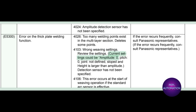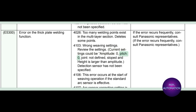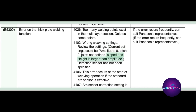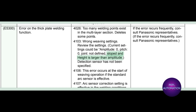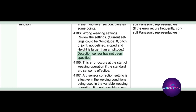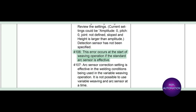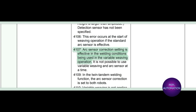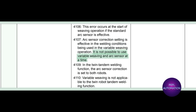Current settings could be: amplitude 0, pitch 0, joint not defined, sloped and height is larger than amplitude, or detection sensor has not been specified. Subcode 4106: this error occurs at the start of weaving operation if the standard arc sensor is effective. Subcode 4107: arc sensor correction setting is effective in the welding conditions being used in the variable weaving operation. It is not possible to use variable weaving and arc sensor at the same time.